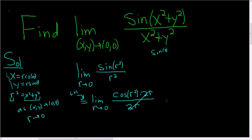These cancel. And so we have the limit as r approaches 0 of the cosine of r squared. And cosine is a continuous function. So we can simply plug in 0, and we get cosine of 0, which is equal to 1. And so this limit is actually equal to 1.